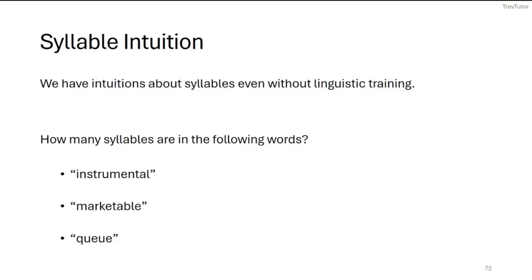Now let's see how we can take our phonotactics and knowledge of vowels and consonants and group things up into syllables. We have a pretty good intuition about syllables if you are a native speaker of a language. For example, in elementary school you probably learned to clap to sounds — like 'instrumental' would be four claps. So we would know this has four syllables. In fact, the fact that kids can do this without any linguistic training tells us that syllables do in fact exist.